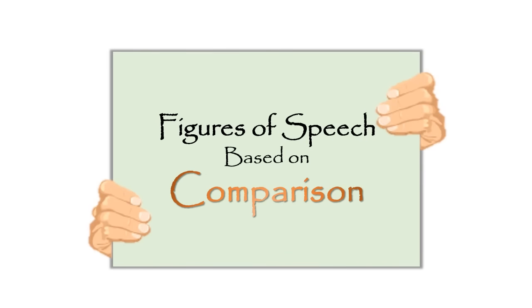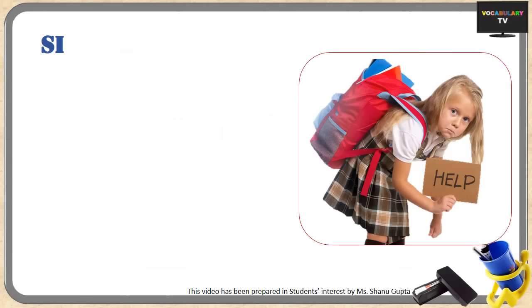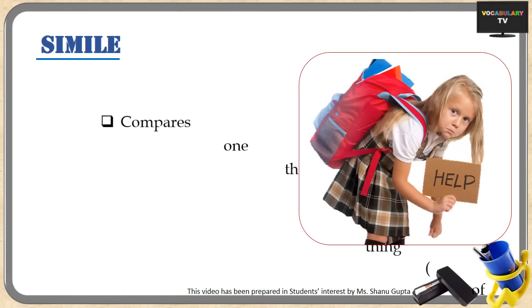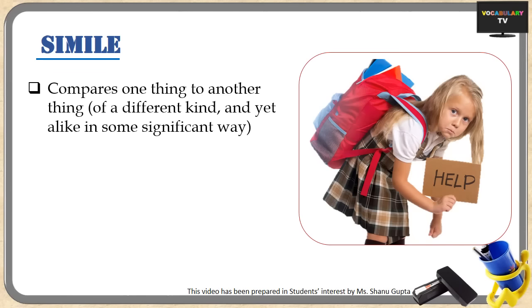Now let's cover each of the figures of speech in detail. In this section we are going to cover the figures of speech based on comparison or resemblance. The very first and one of the most commonly used figures of speech is simile. A simile is an explicit comparison where you say that one thing is like another thing. The two things are of a different kind and yet are alike in some significant way. Most similes clearly state and emphasize the parameter or quality on which the two objects are being compared.